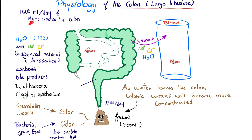About one and a half liters of chyme per day enters your colon. Most of it will be absorbed into the bloodstream, especially sodium, chloride, and water. Tons of water will be absorbed — if this did not happen, all that water would end up causing diarrhea. Colonic purge, which is very rapid movement, gives you no time to absorb water, and you end up with diarrhea.